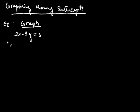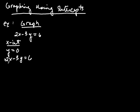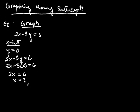The way we do it is we look for both intercepts. To find the x-intercept, you set y equals 0. So you take your equation, 2x minus 3y equals 6, and replace the y with 0. It becomes 2x minus 3 times 0 equals 6. Since 0 times 3 is 0, we get 2x equals 6, so x is equal to 3. Now, x is equal to 3 when y is equal to 0, so that's the ordered pair (3, 0) — that's where the line crosses the x-axis. That's the x-intercept.